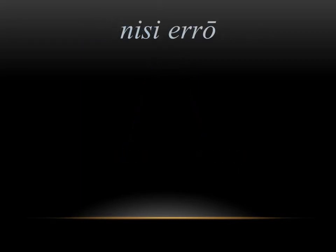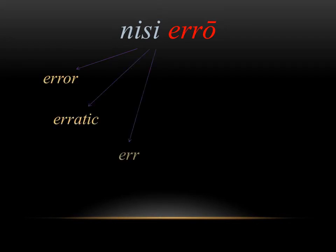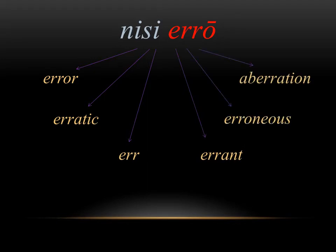The phrase nisi erro in Latin means unless I'm mistaken. The part we want to look at specifically is erro, which means I'm mistaken, or I wander, or I make a mistake. In English we get the words error, erratic, errant, erroneous, and even aberration. All six of these are holding on to that idea of making a mistake. Erro doesn't just mean to make a mistake — it also means to wander, as in to wander from the right answer. So all six of these come back to the idea of making a mistake or somehow wandering.